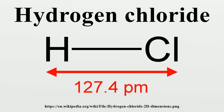Hydrogen chloride forms corrosive hydrochloric acid on contact with water found in body tissue. Inhalation of the fumes can cause coughing, choking, inflammation of the nose, throat, and upper respiratory tract, and in severe cases pulmonary edema, circulatory system failure, and death. Skin contact can cause redness, pain, and severe skin burns. Hydrogen chloride may cause severe burns to the eye and permanent eye damage.